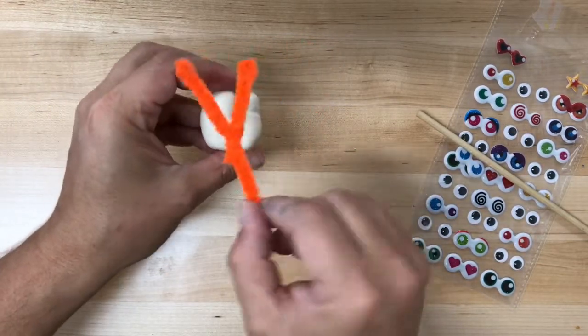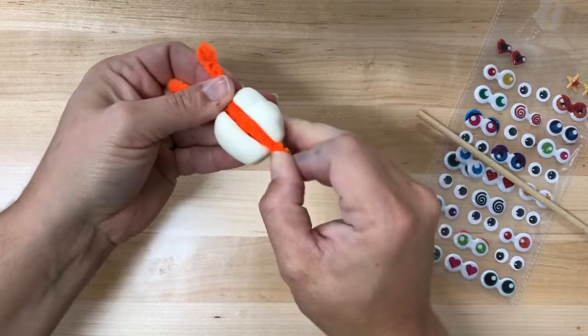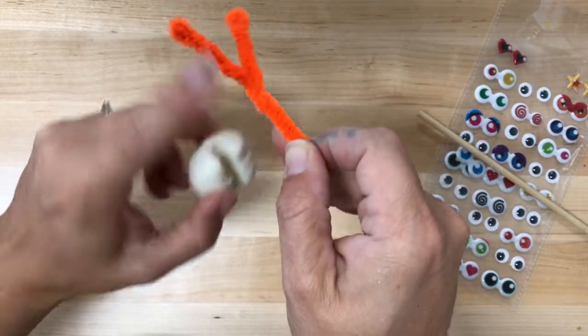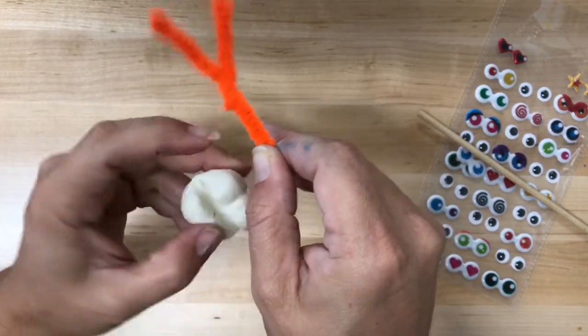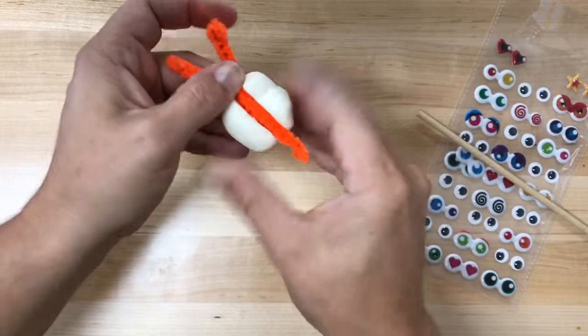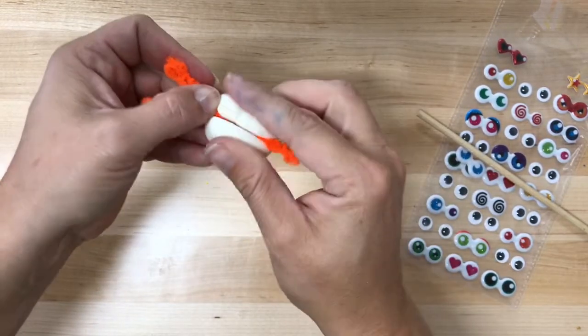Now we're going to take our clay and that crease that we've made earlier, we're going to place the Y right in there. The important part is that we get these edges inside the clay. That's going to help protect students when they're playing with this little snail.